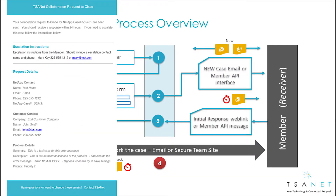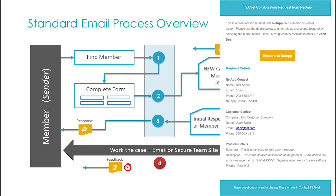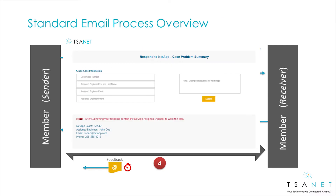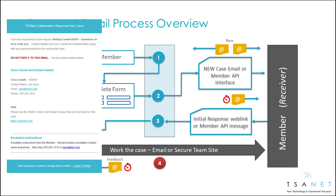Then the email process completes the connection. First, the sender gets an email that includes SLA and escalation instructions to use if needed. The receiver will receive an email with a button to respond to the case. This takes them to a form where they enter their case number, engineer name, and contact details. This information is then sent back to the sender.